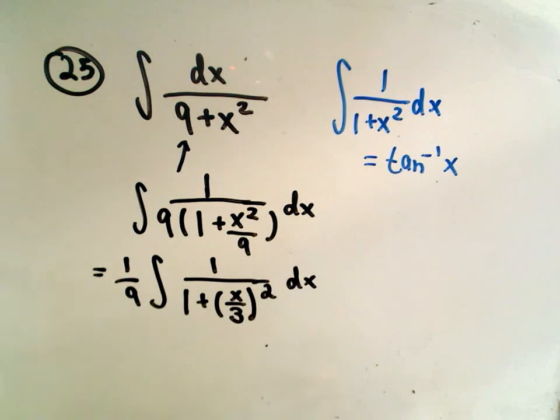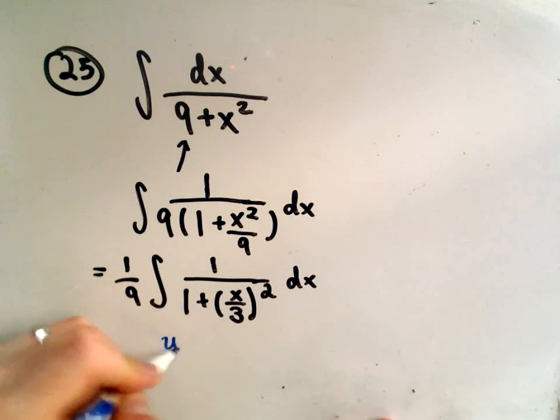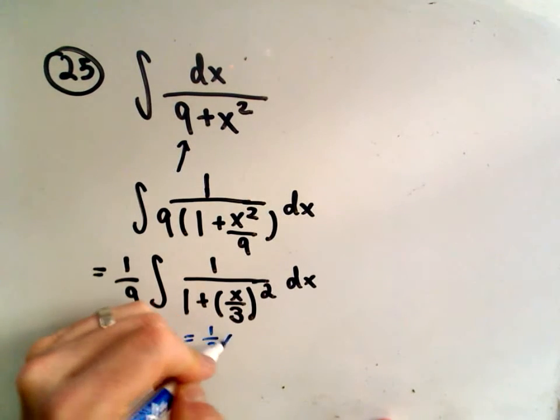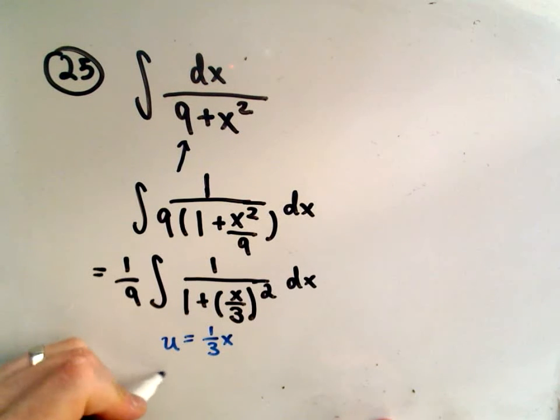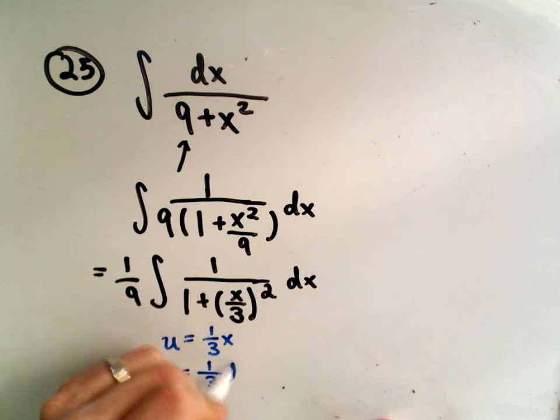And at this point, what we do is we do a u substitution. So I'm going to let u equal x over 3, or equivalently 1/3 x. We calculate the differential, we'll get 1/3 dx.